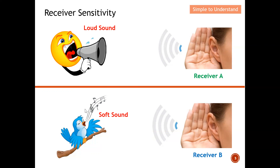Now you need to draw a conclusion: is Receiver A better than Receiver B? You would say this is not a fair comparison, because the transmitter varies — it can be a loud sound or a soft sound. So I cannot conclude that Receiver A is better than Receiver B. Hence, receiver sensitivity cannot include consideration of the transmitter. If it depended on the transmitter, I could simply emit as loud a sound as possible so you'd hear it, and then falsely conclude that radio is better.